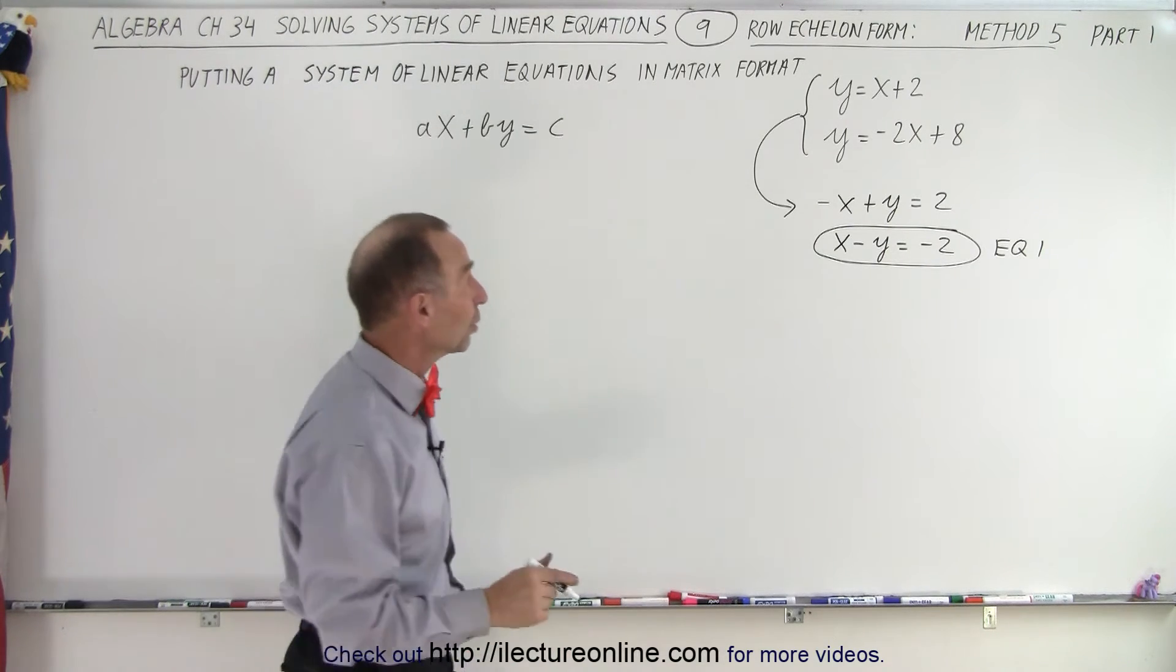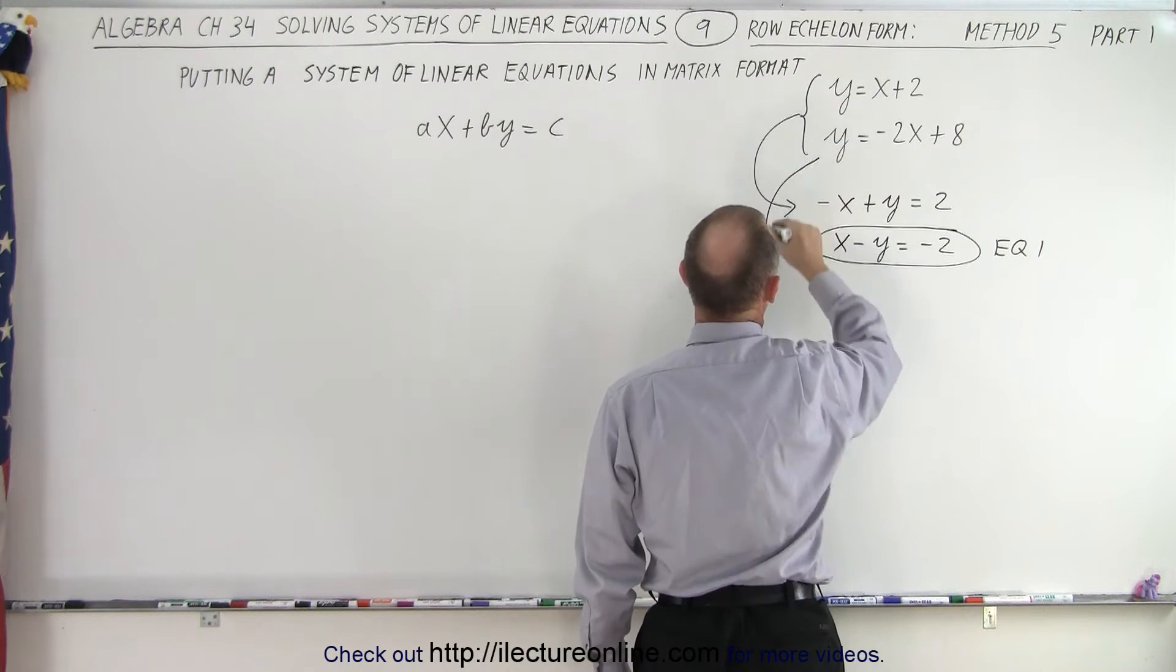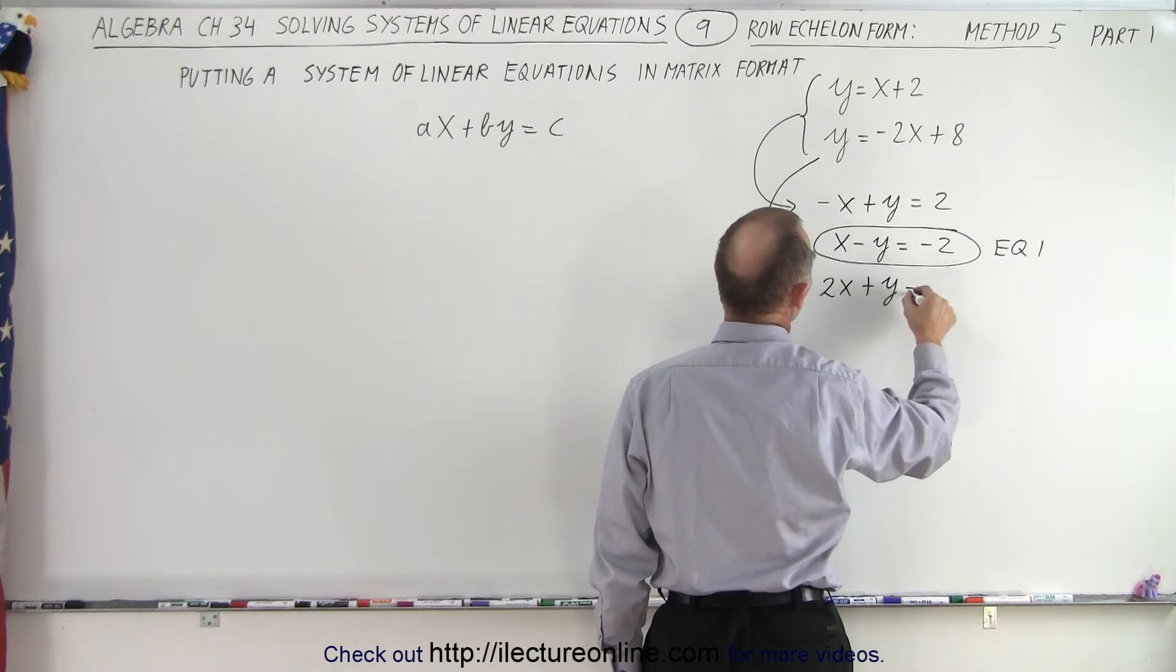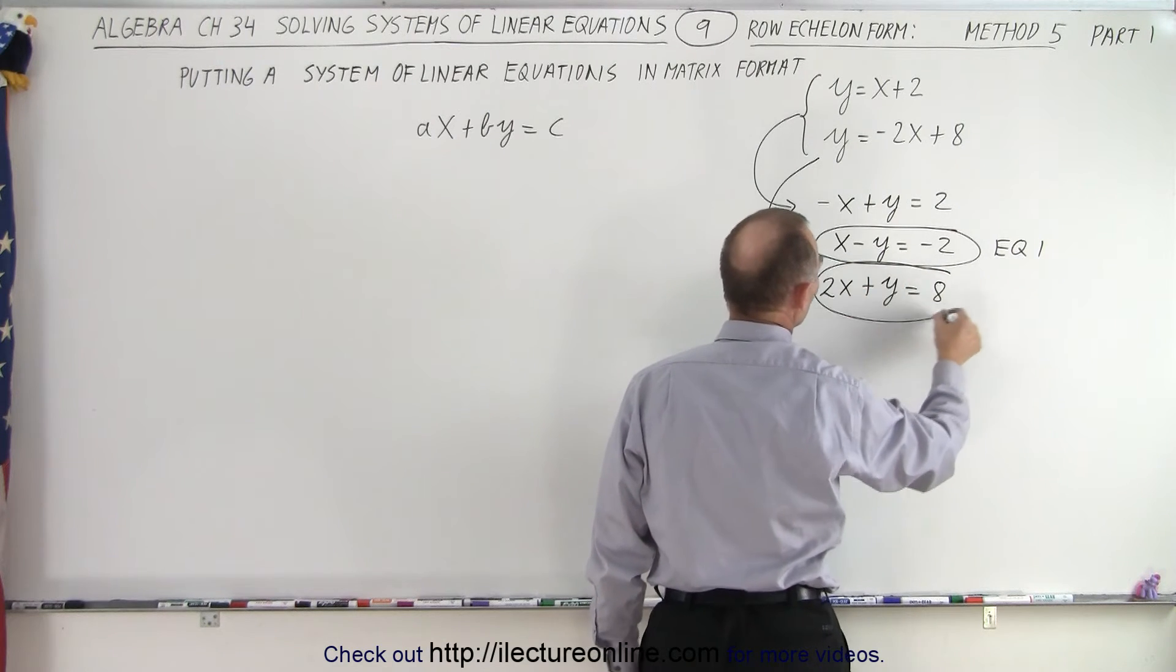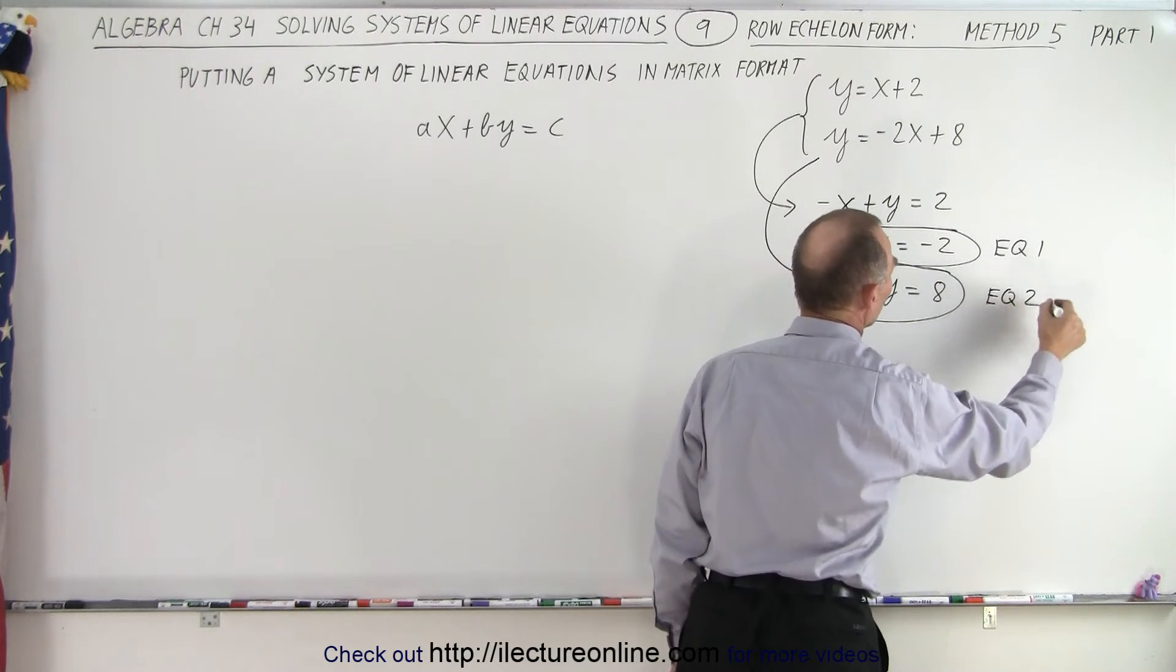Then we're going to take our second equation and move things to the other side. That becomes 2x + y = 8. We don't have to change that; everything is positive here. So this becomes equation number 2.